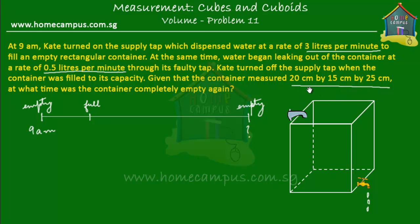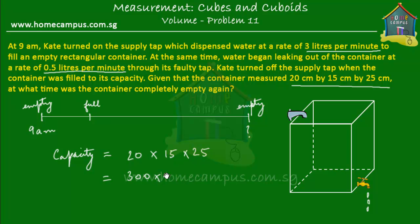The maximum volume of water that this container can hold is its capacity: 20 cm by 15 cm by 25 cm. So the capacity is 20 × 15 × 25. That's 20 times 15 equals 300, and 300 times 25 equals 7500 cubic centimeters. Now we know that 1000 cubic centimeters equals 1 liter, so the capacity of the container is 7.5 liters.